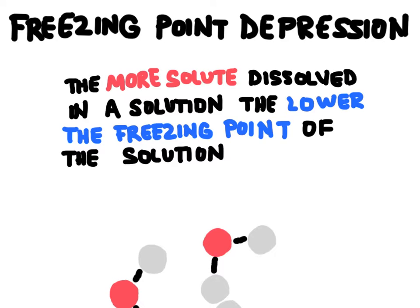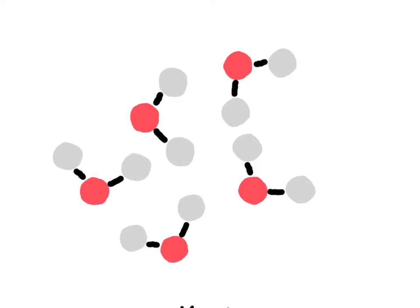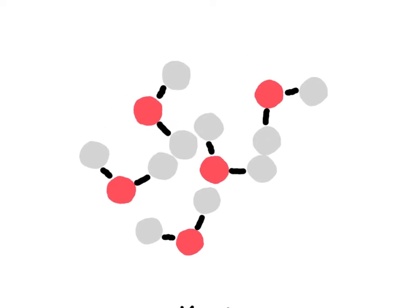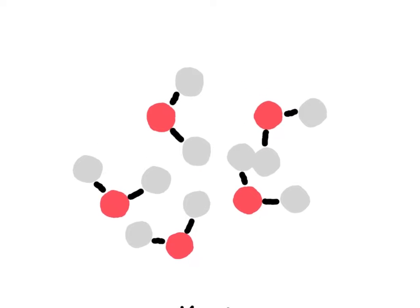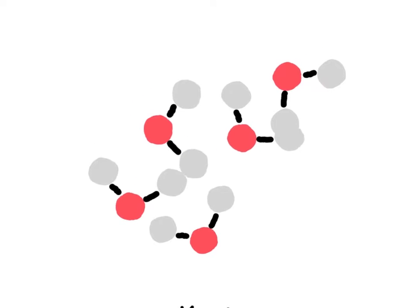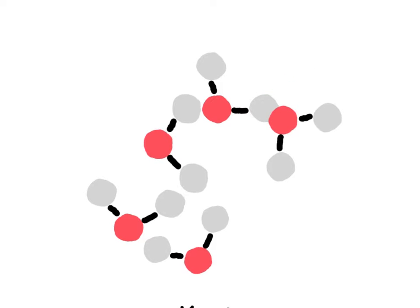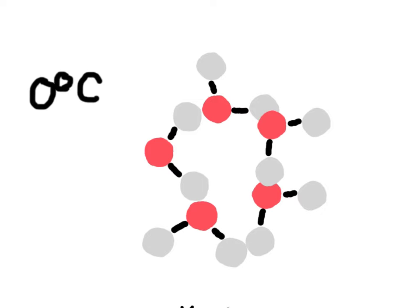The first colligative property is freezing point depression: the more solute dissolved in a solution, the lower the freezing point of the solution. Before water freezes, all the water molecules are moving around in solution pretty rapidly, loosely attracted by intermolecular forces. As they freeze, they slow down and start connecting to each other and locking in place. This happens when water hits zero degrees Celsius — we've reached the freezing point.